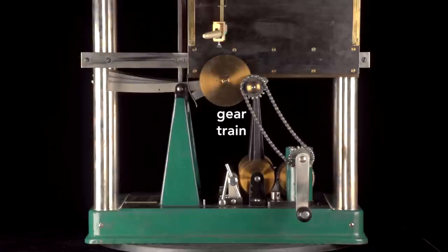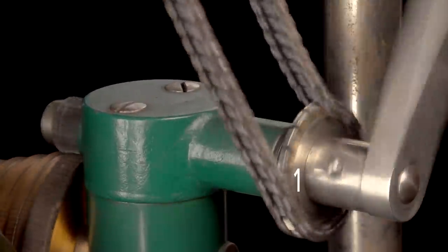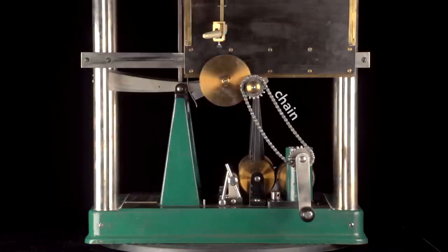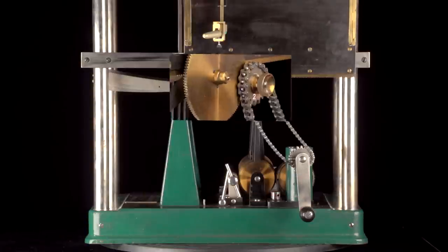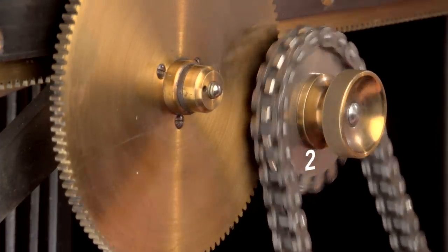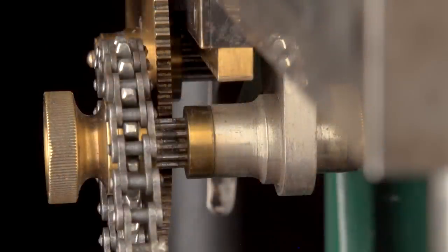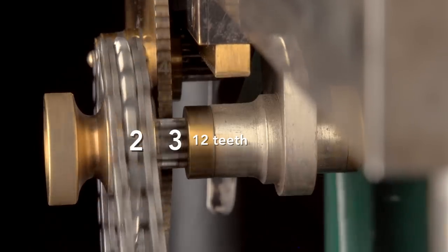This gear train that moves the platen consists of these six gears. The first gear is on the shaft of the crank. A chain connects this first gear to the second gear, which you can see up close here. On the same shaft as the second gear and sitting just behind it is a third gear. It has 12 teeth and engages the rack, which is the fourth gear.